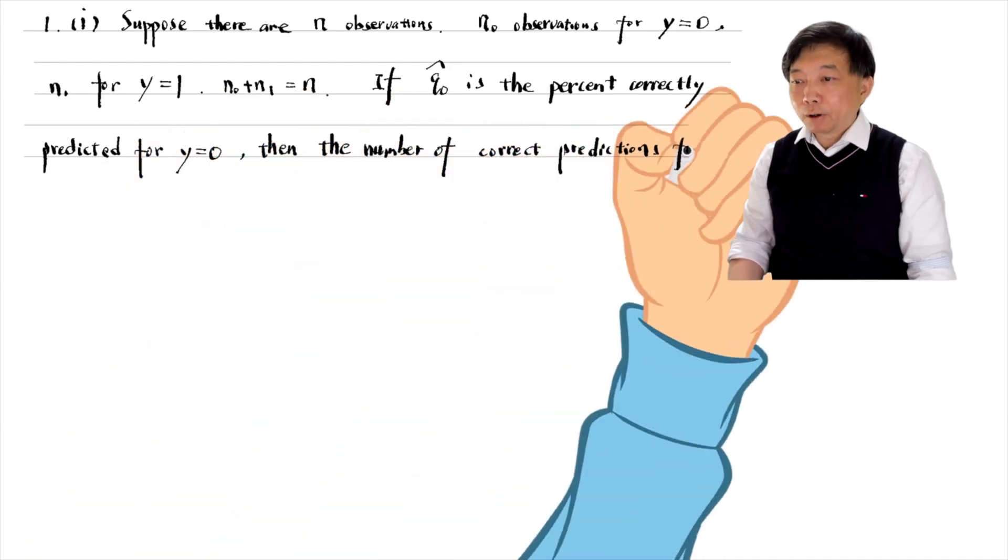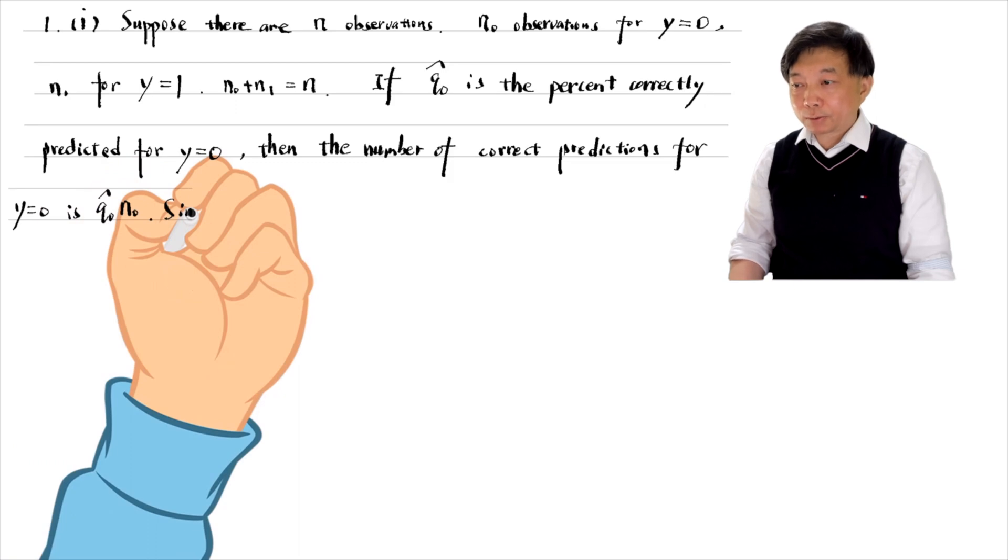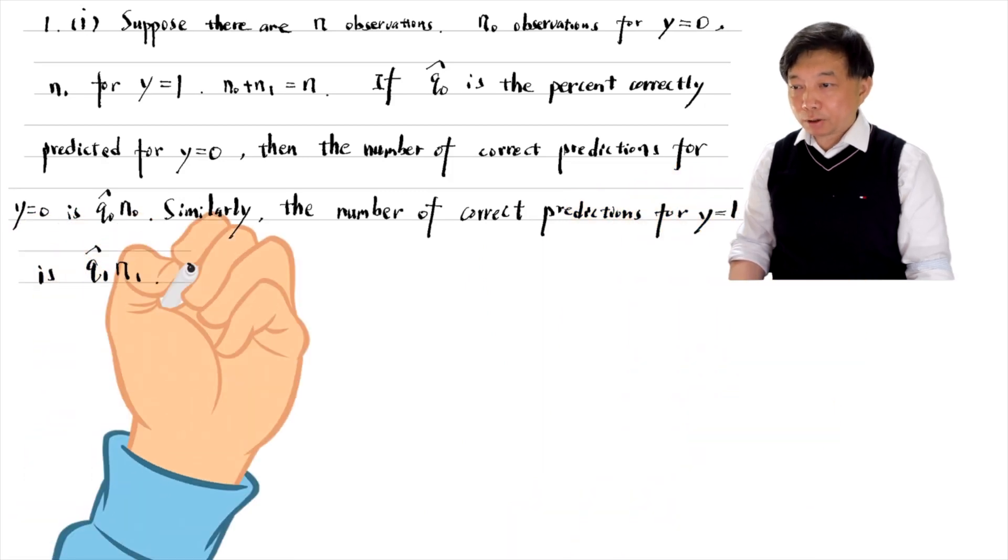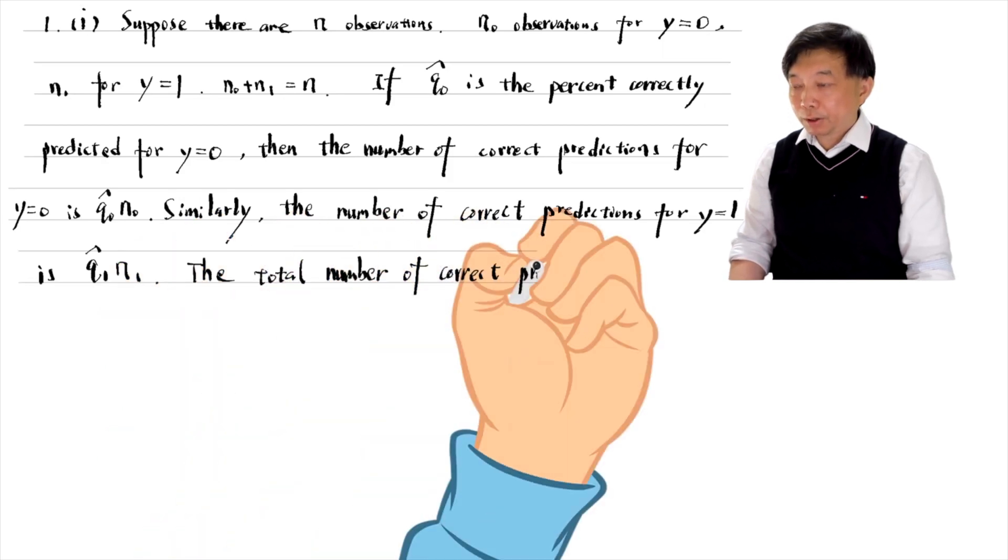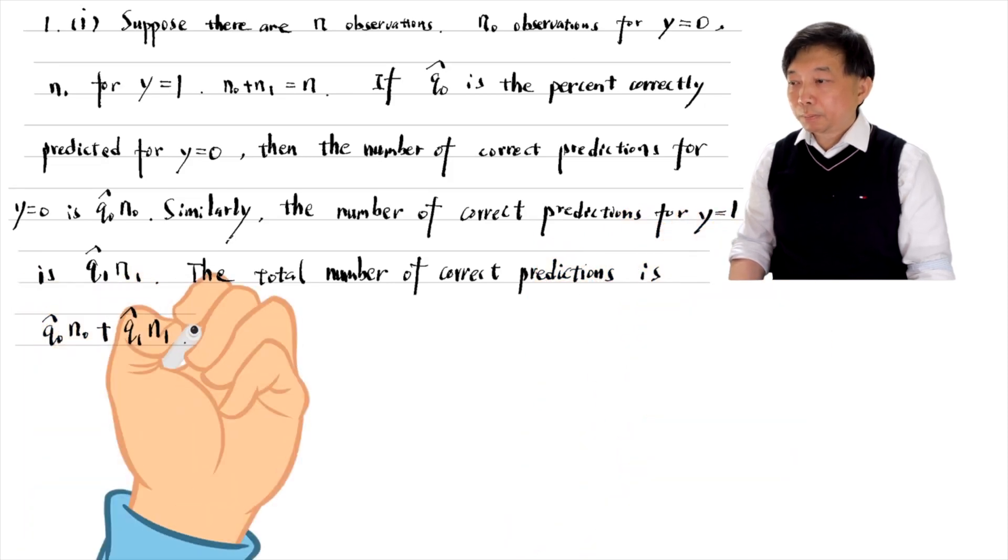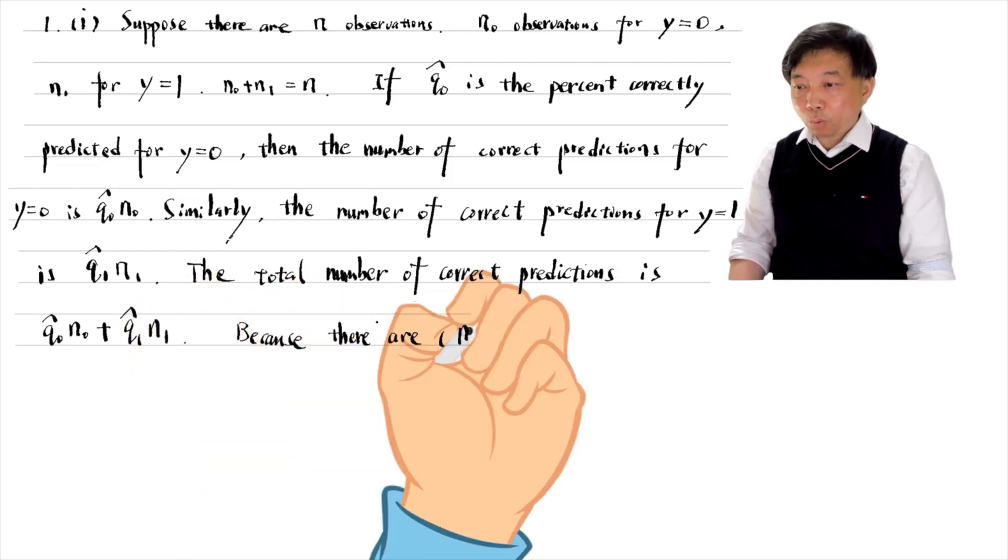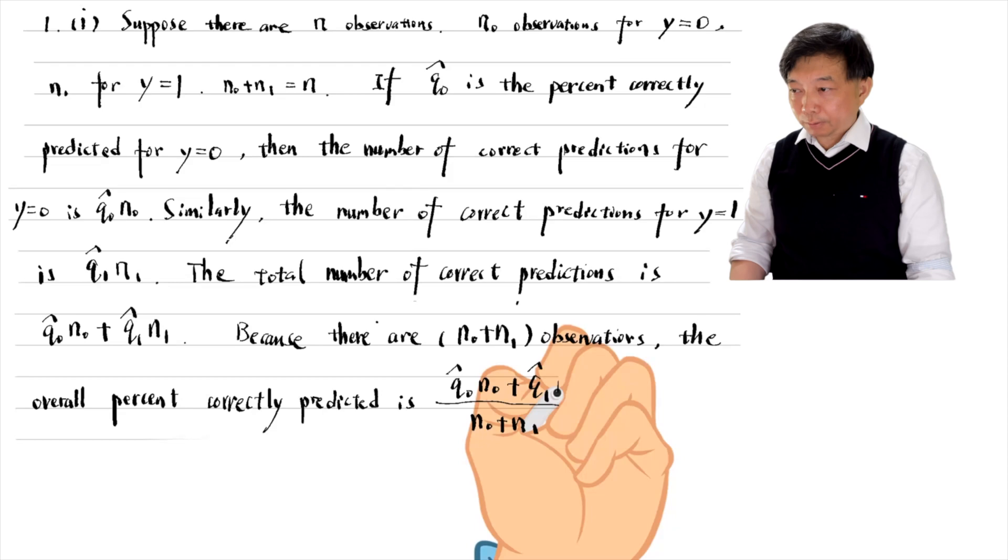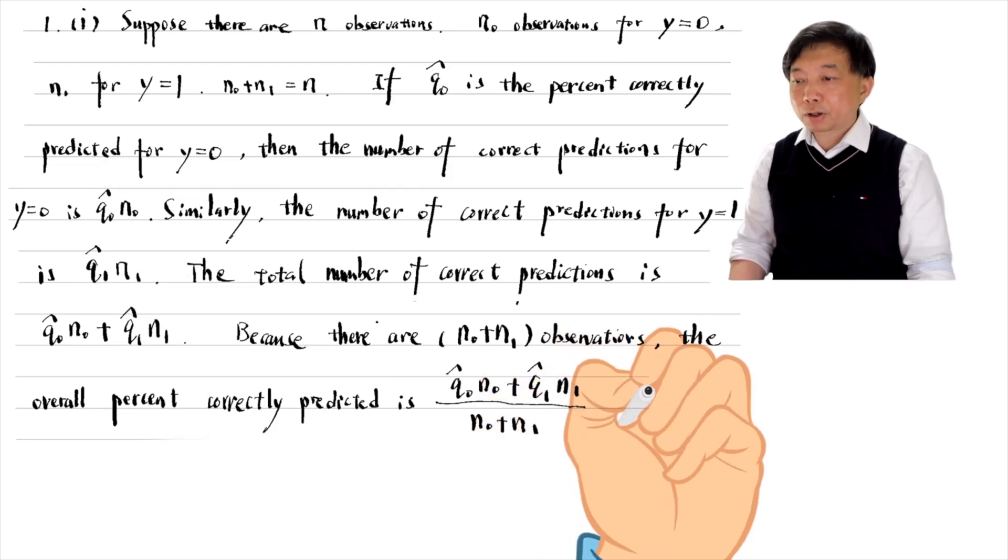If q₀ hat is the percent correctly predicted for y equals zero, then the number of correct predictions for y equals zero is q₀ hat times n₀. Similarly, the correct predictions for y equals one is q₁ hat times n₁. The total number of correct predictions is q₀ hat times n₀ plus q₁ hat times n₁. There were n₀ plus n₁ observations in the sample.